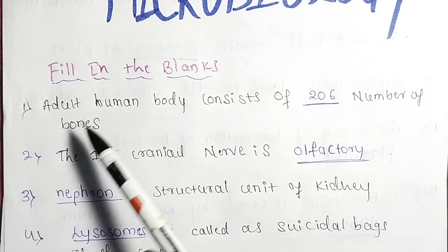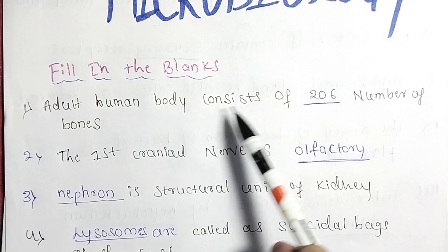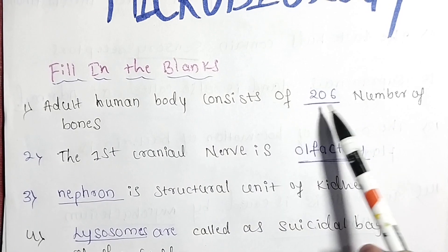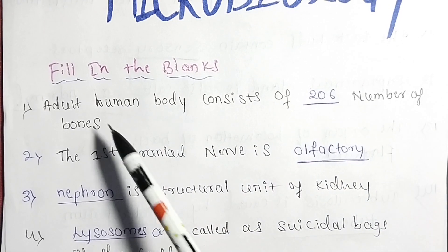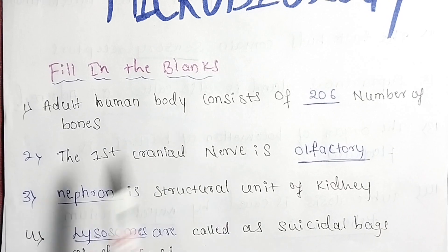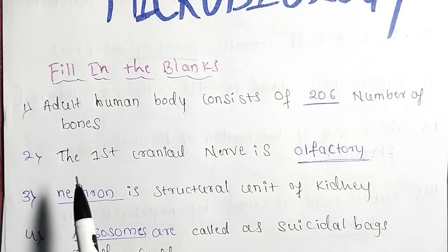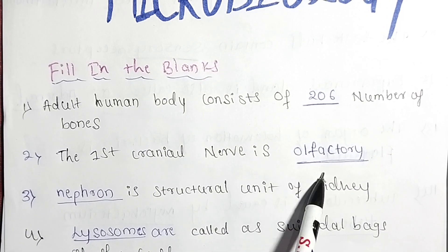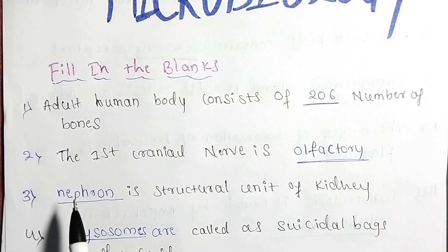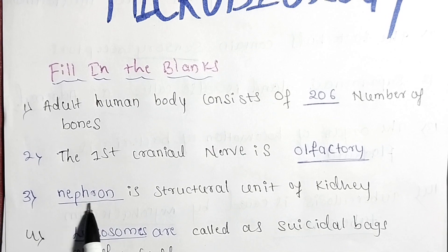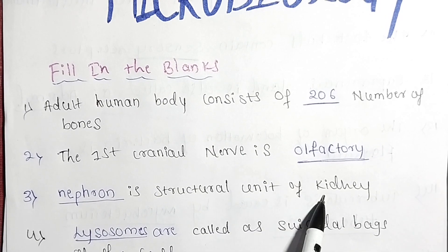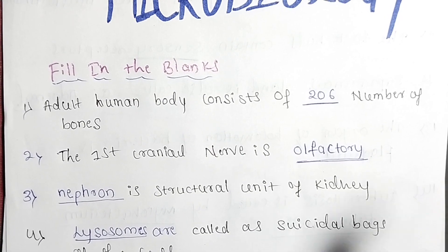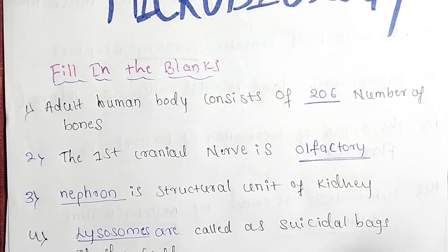First question: an adult consists of 206 bones. Second question: the first cranial nerve is the olfactory nerve. Next: the nephron is the structural unit of the kidney. These are very important questions in the fill-in-the-blanks.